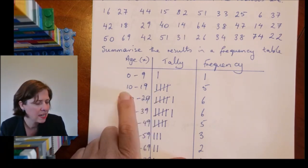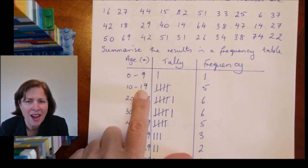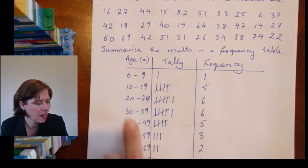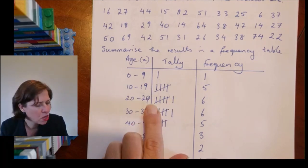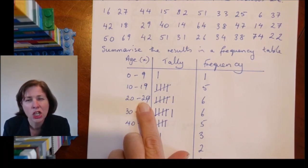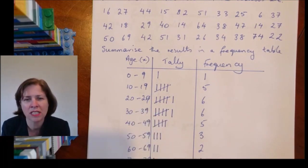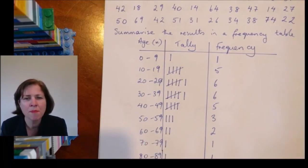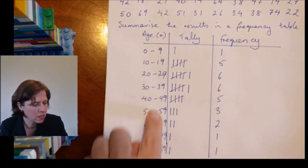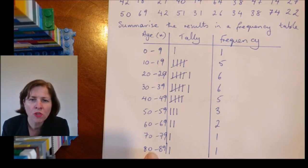So that everything with a one in front is included here, everything with a two in front is included here. If you put a thirty here on the end, you're likely to accidentally put your thirties in the wrong place. So just think about how you divvy up these and make sure they're all the same width.